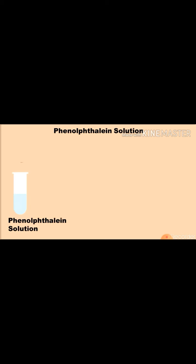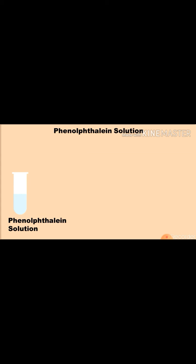Let's see how phenolphthalein solution is used as an indicator. Take a test tube half-filled with phenolphthalein solution. Pour few drops of acid into the phenolphthalein solution. No color change takes place. In the presence of acid, phenolphthalein remains colorless.